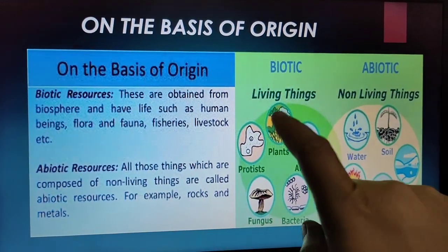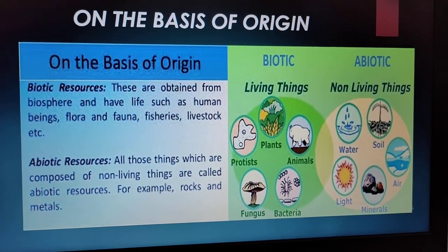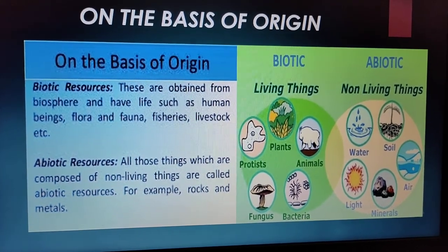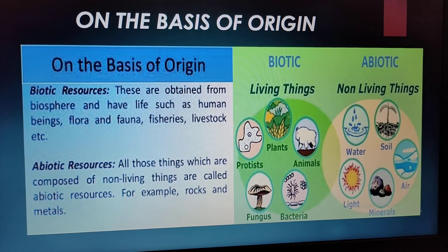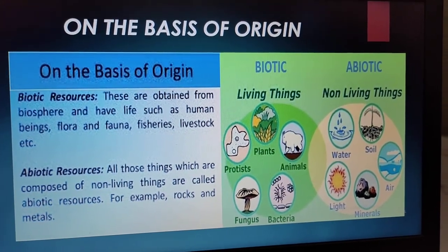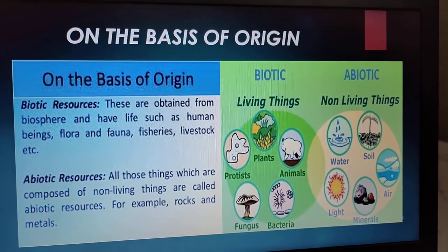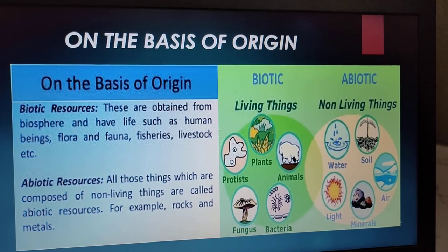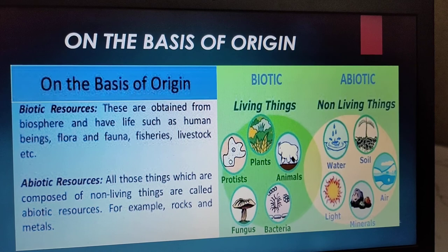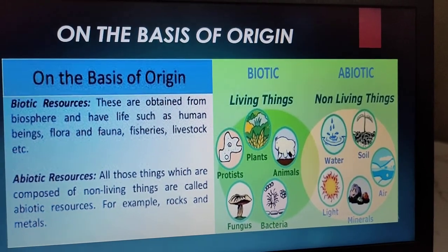Biotic resources are obtained from the biosphere and have life, such as human beings, flora and fauna, fisheries, and livestock. Abiotic resources are all those things which are composed of non-living things. For example, rocks and metals.